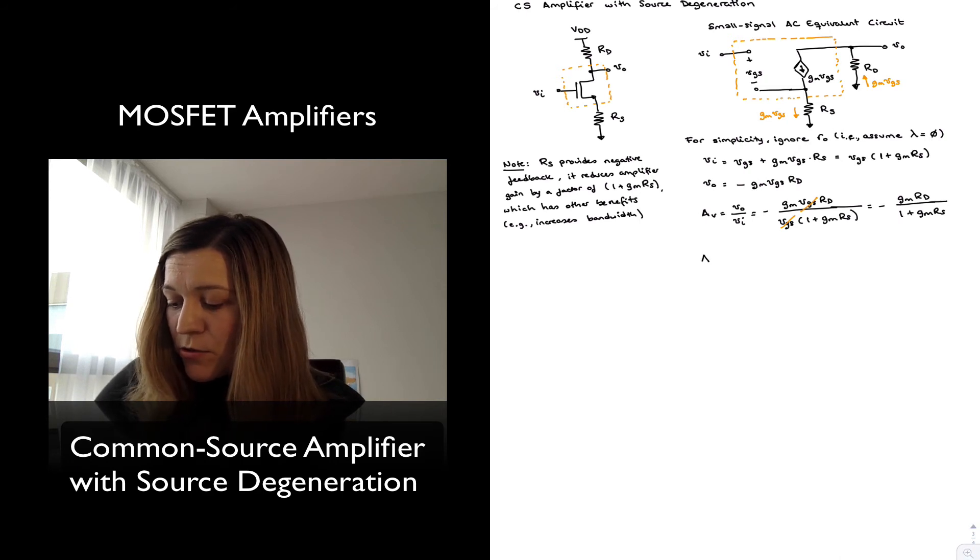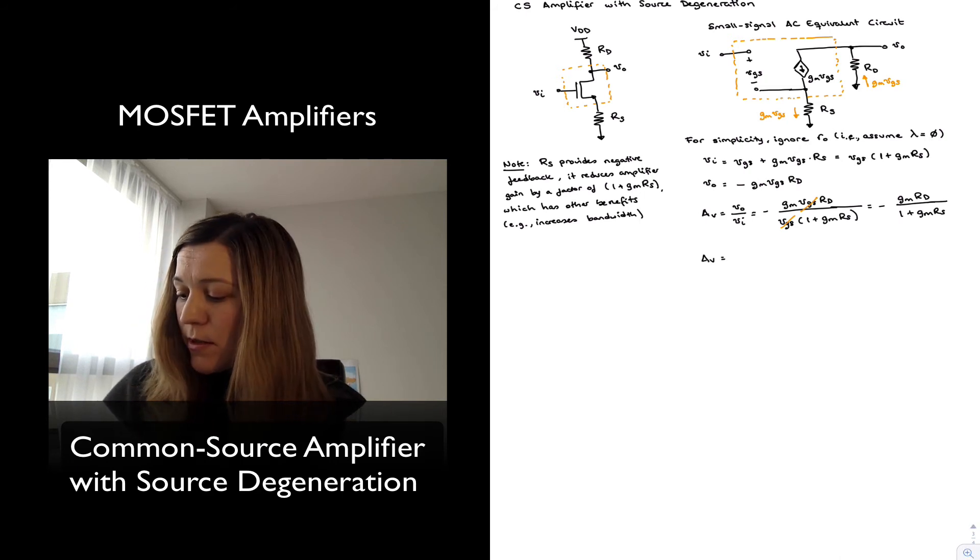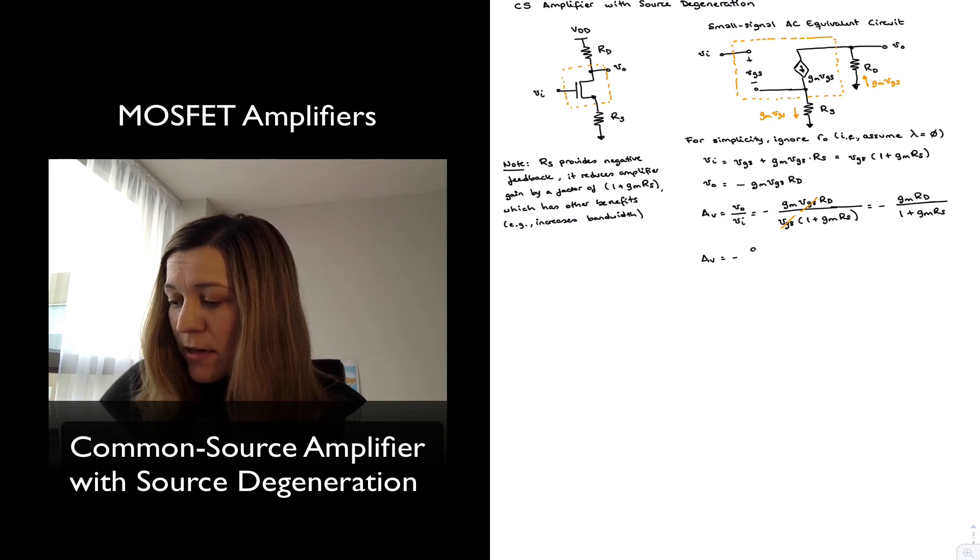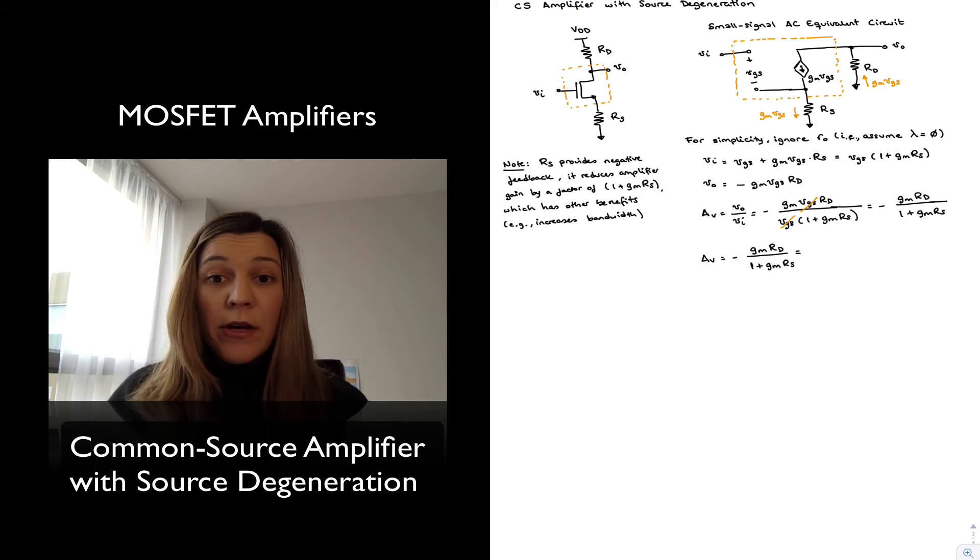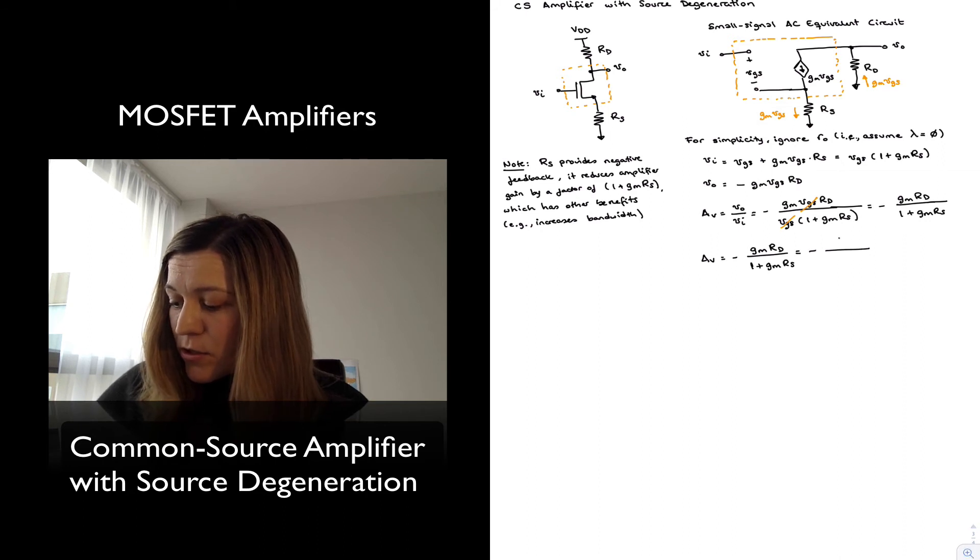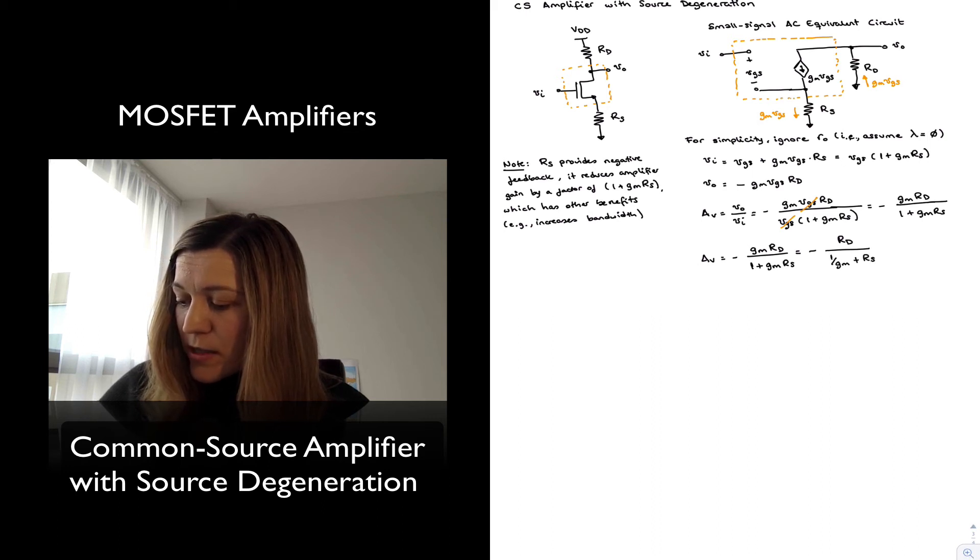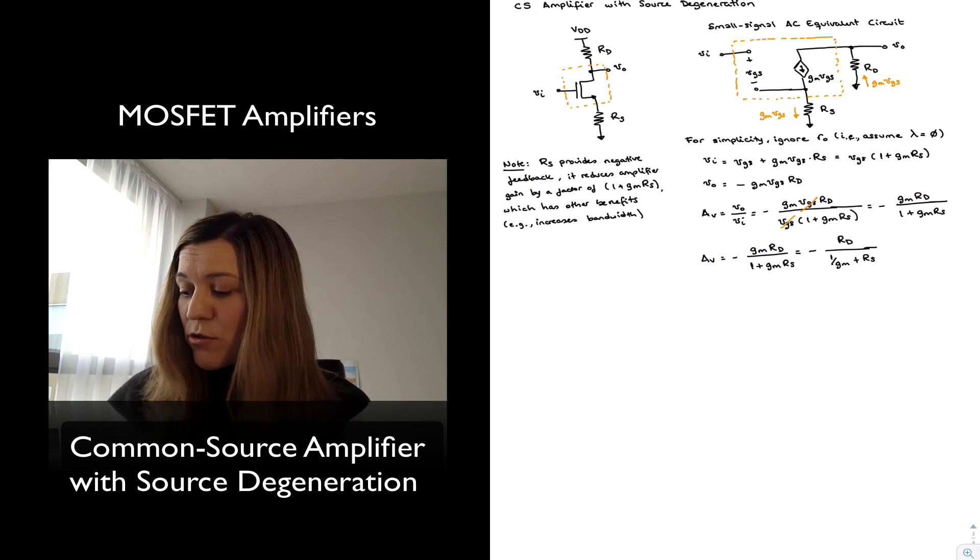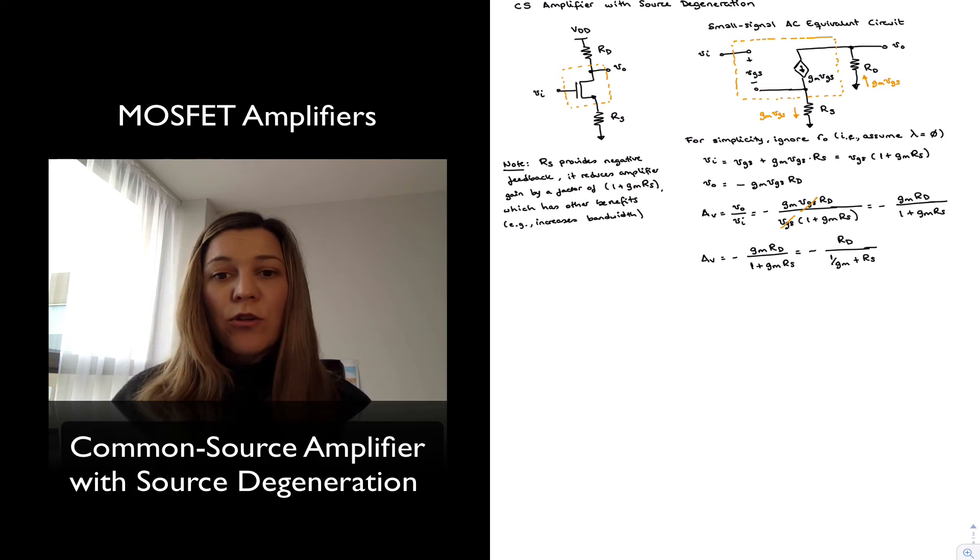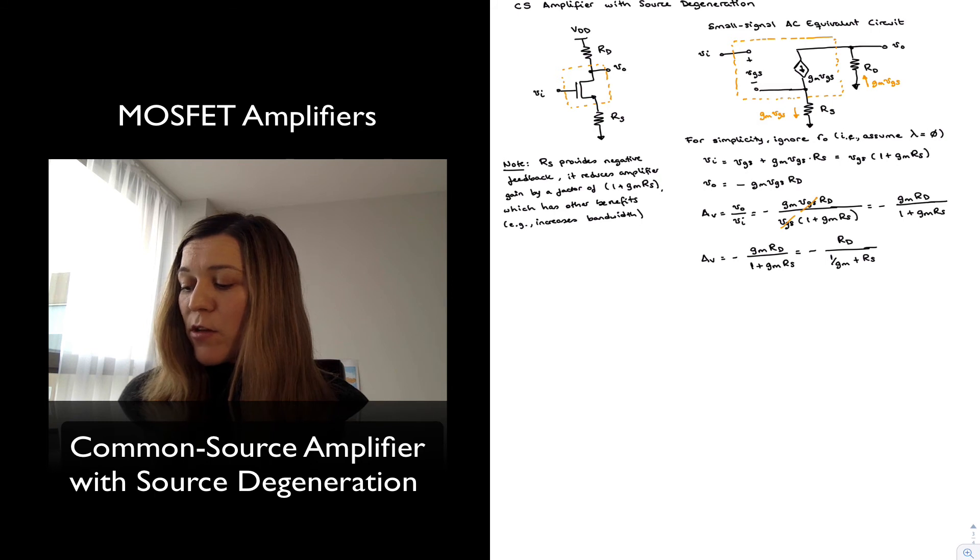If you wanted to relate it to the expression for voltage gain that we have seen for the BJT amplifier system, notice that I can divide numerator and denominator by GM and get a very similar expression. This will be equal to minus RD divided by 1 over GM plus RS, where 1 over GM will be the equivalent of re in the BJT transistor. And so you can also express it as negative the overall drain resistance divided by the overall source resistance.